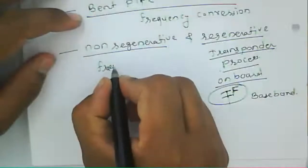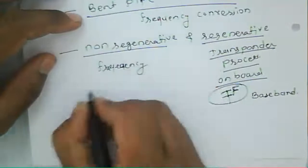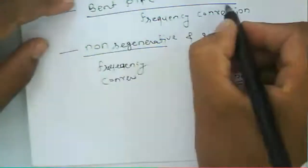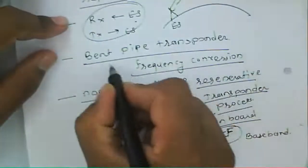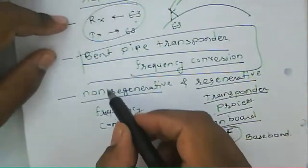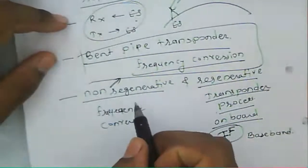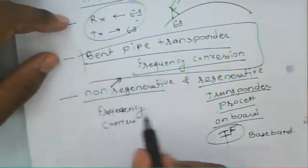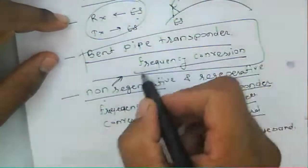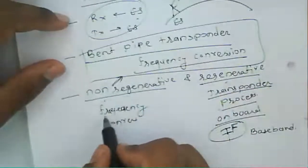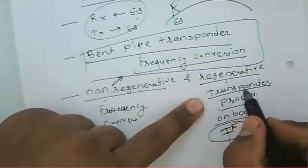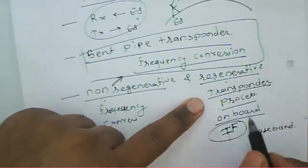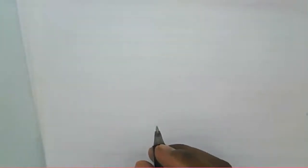In the non-regenerative type, there is only frequency conversion. The bent pipe transponder, which has only frequency conversion, belongs to the non-regenerative type. In the regenerative type, the signal is processed and then retransmitted using frequency change. So there are two types of transponders: regenerative and non-regenerative, based on their roles.